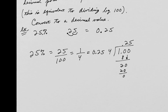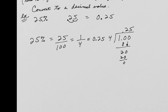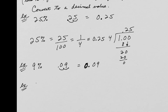So if I give you 9% and want you to write it as a decimal, start with 9, remove the percent sign, and move the decimal point two places to the left — I have to add a zero, so this is 0.09. What about 0.2%? That's a very small number. I drop the percent symbol and move the decimal two places to the left, adding another zero: this is the same as 0.002.